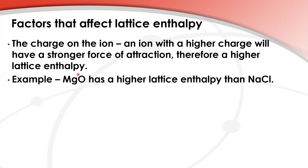For example, magnesium oxide has a higher lattice enthalpy than sodium chloride. That's because we have Mg2+ and O2- in magnesium oxide, whereas for sodium chloride we only have Na+ and Cl-. Magnesium oxide has a higher charge on both ions, therefore a higher lattice enthalpy.